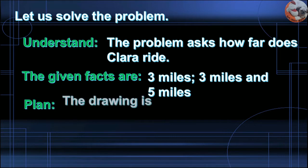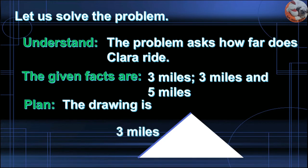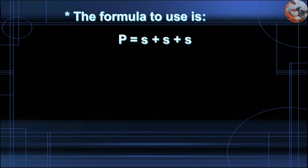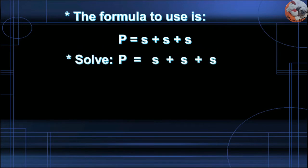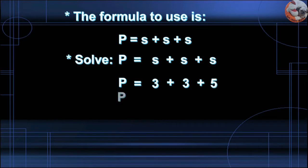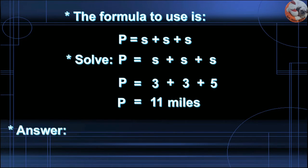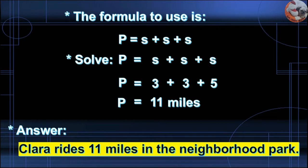Plan — the drawing shows a triangle with sides of 3 miles, 3 miles, and 5 miles. The formula to use is P = S + S + S, where P is the perimeter and S is the side. Solving: P = 3 + 3 + 5. P = 11 miles. Answer: Clara rides 11 miles in the neighborhood park.